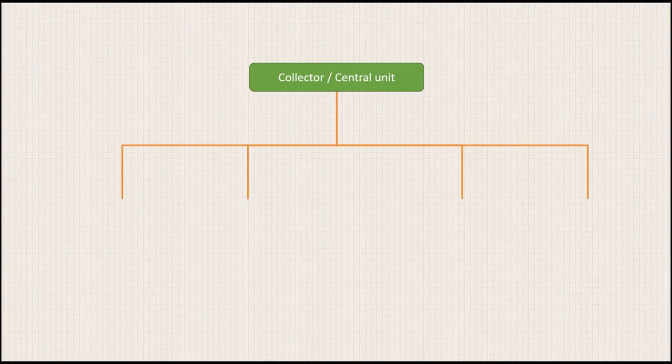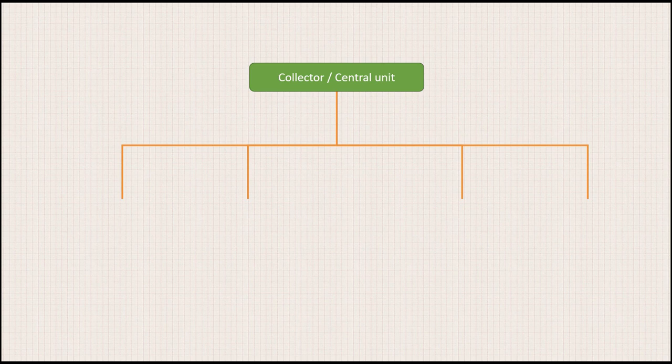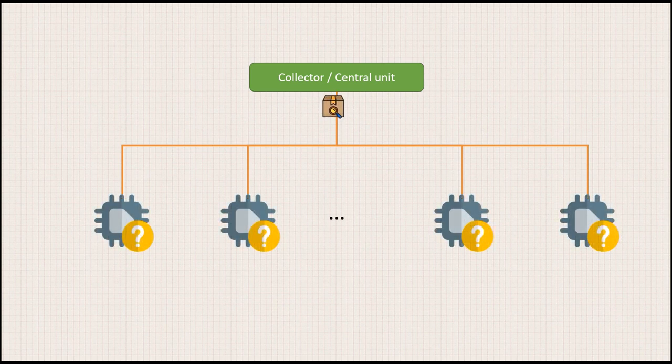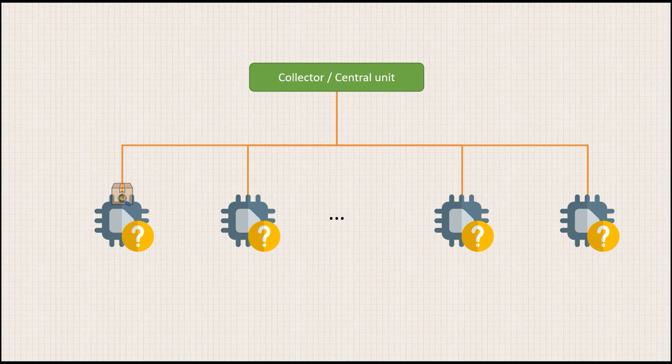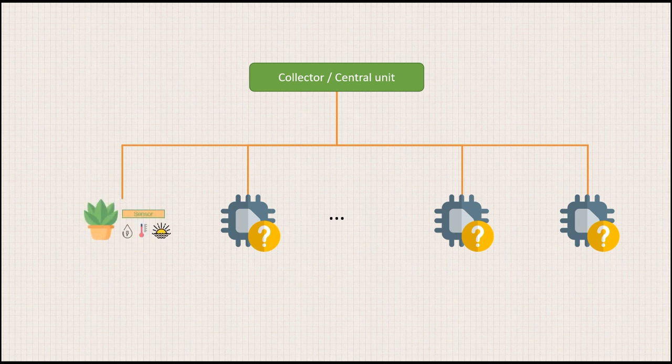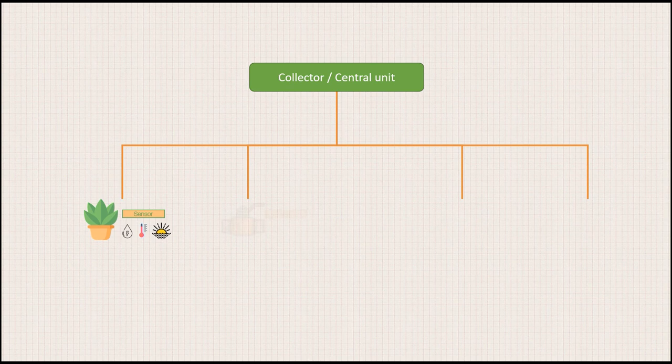On powerup, central unit will scan the I2C bus. For every I2C device it finds, it will ask the device to send back its identification and capabilities. This is basically central unit asking the device, hey who are you and what can you do? The I2C device responds with I'm a plant sensor or solenoid driver or any other device type you might have added to your system. After central unit has completed this step for every device on the bus, it now knows how many I2C devices it has and also what are their capabilities.